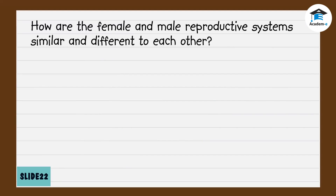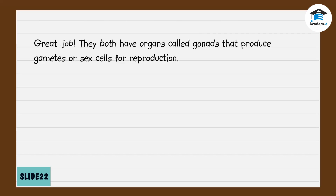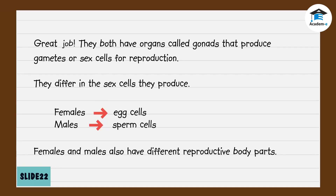How are the female and male reproductive systems similar and different to each other? They both have organs called gonads that produce gametes or sex cells for reproduction. They differ in the sex cells they produce — females produce egg cells while males produce sperm cells. Females and males also have different reproductive body parts.